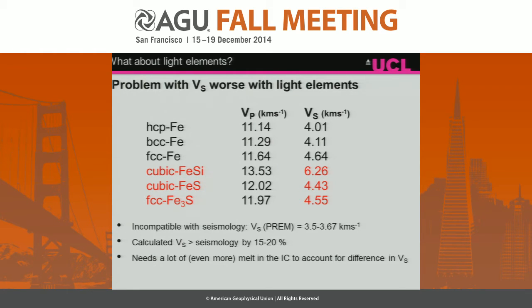What about light elements? The problem with adding light elements was it made the problem even worse — shear wave velocities went up. To go along with the melt in the inner core, the amount of melt required would increase to maybe 40% in some cases. Basically, light elements don't solve it.